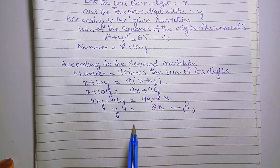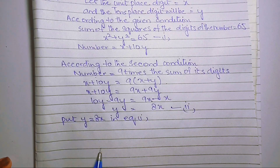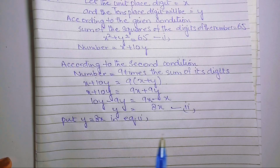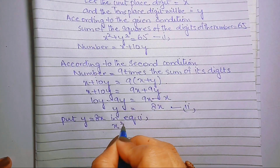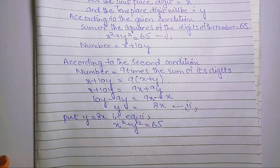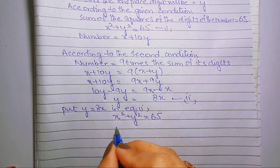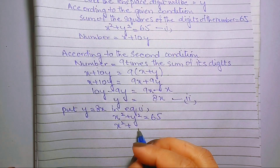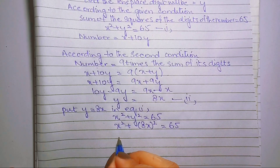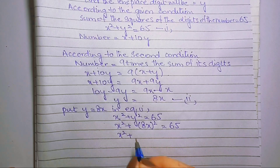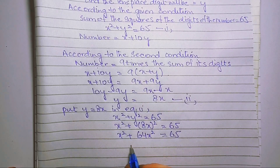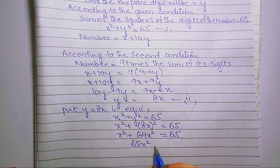अब y की value जो equation 2 से मिली है उसे equation number 1 में put कर देते हैं। Equation 1 थी: x square plus y square equals to 65। इसमें y की value 8x put करने पर x square plus (8x) square equals to 65, यानि x square plus 64x square equals to 65 आजाएगा।